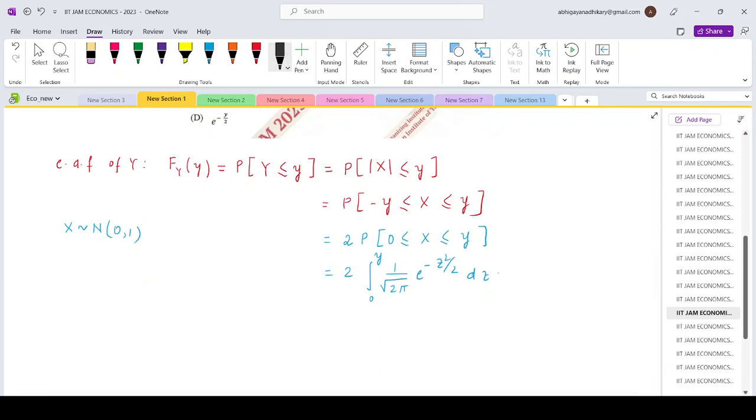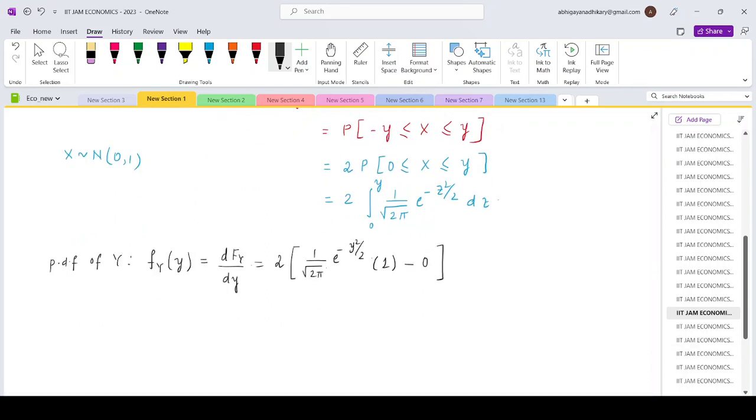Now from the CDF we need to arrive at the PDF of Y which is small f Y, which is nothing but the derivative. So we need to use the Leibniz expression. That would be 2 times 1 by root 2 pi e to the power minus Y by 2 into derivative of Y which is 1 minus 0. So the PDF turns out to be root over 2 by pi e to the power minus Y by 2.